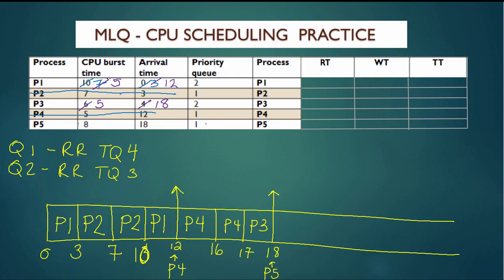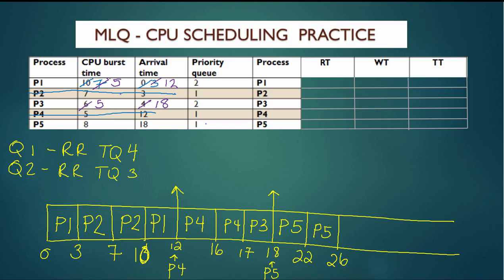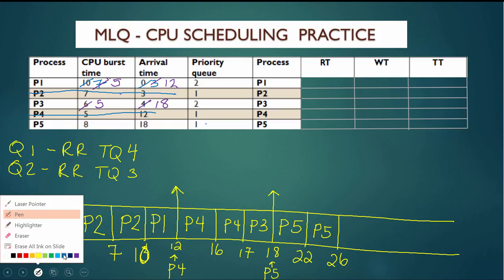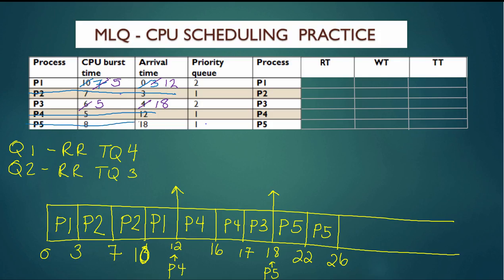P5 is a higher priority process, so P5 now gets the CPU and runs for four time units until time 22. Since at time 22 there are no other level-one processes in the ready queue, P5 will continue and finish execution at time 26.